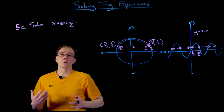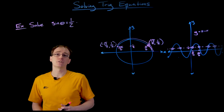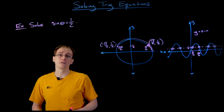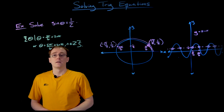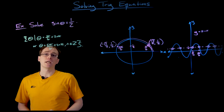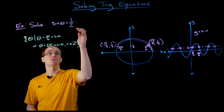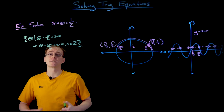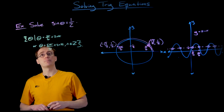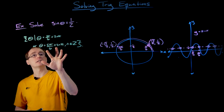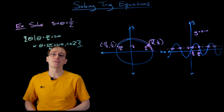I'll go ahead and show you a common way to list out all these infinitely many solutions using set builder notation, and then I'll explain how this notation works. Here's a way we can use set builder notation to describe our infinitely many solutions to this basic sine equation, when sine of theta is equal to one half. The real important part of this notation are these little equations for theta.